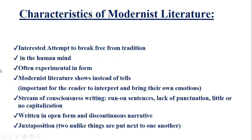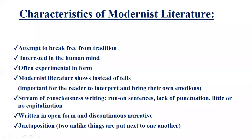The major characteristics are: interested in the human mind, often experimental in form, modernist literature shows instead of tells — it is important for the reader to interpret and bring their own emotions. Stream of consciousness writing, run-on sentences, lack of punctuation, little or no capitalization, written in open form and discontinuous narrative, juxtaposition — two unlike things placed next to one another.